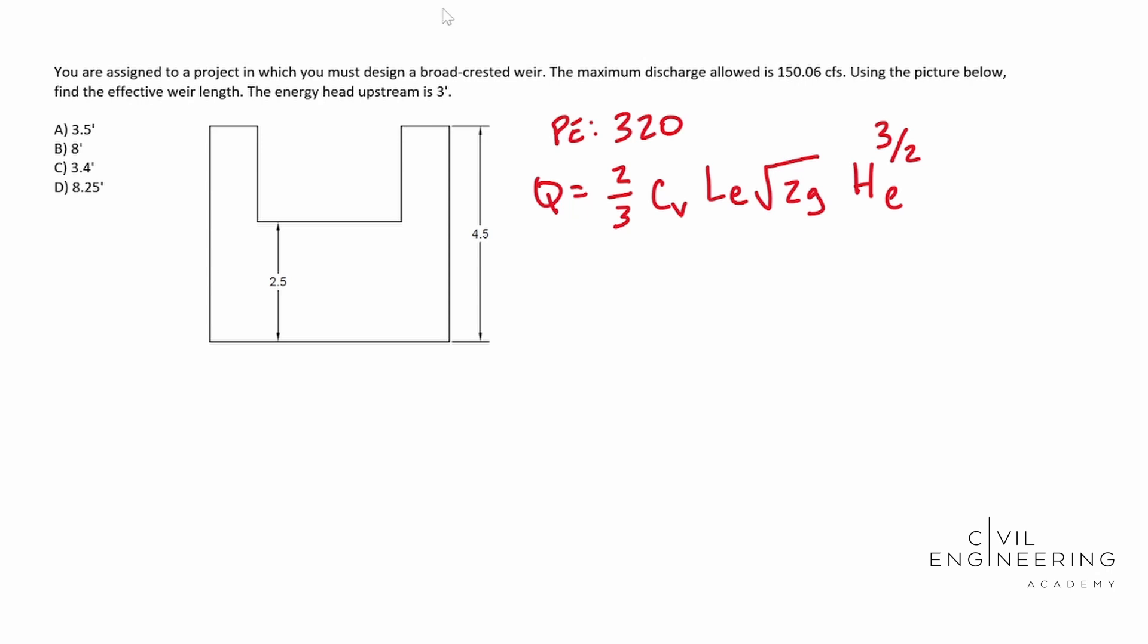We know all of these except CV. We know we're solving for our effective length. We're given the flow rate. We're given the energy head. So that CV value is something that we need to solve for. You'll see it a little bit farther down in your legend when they call out the parts of the equation.